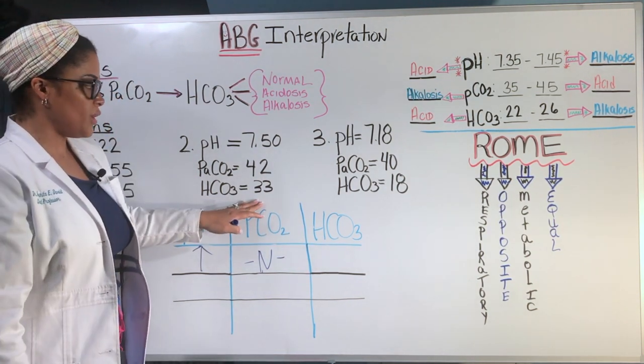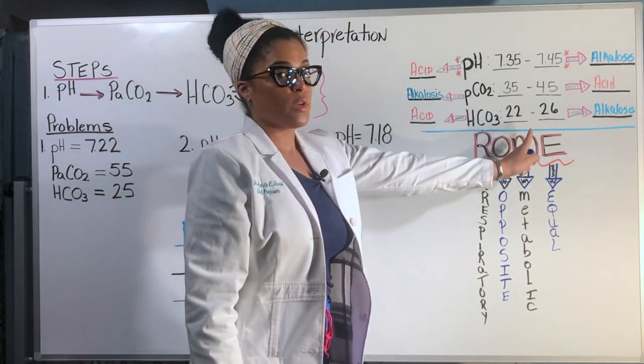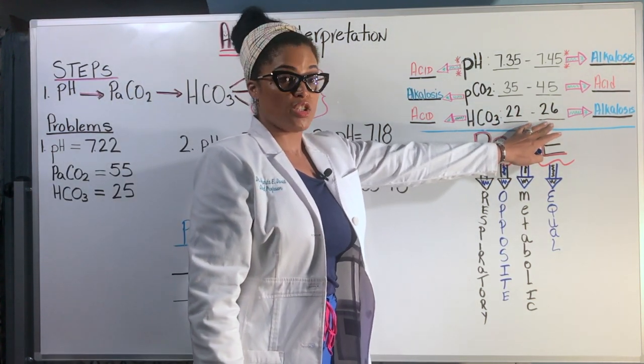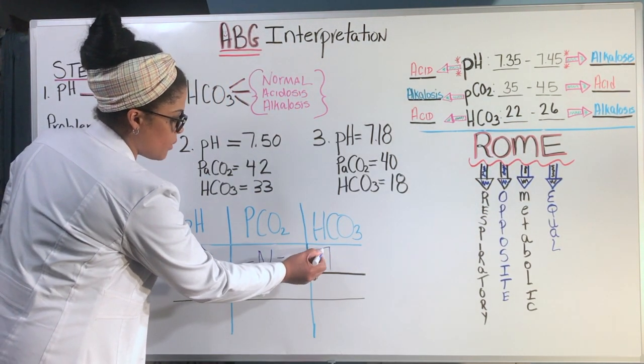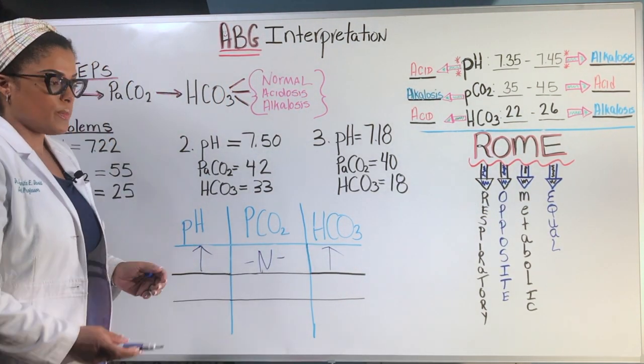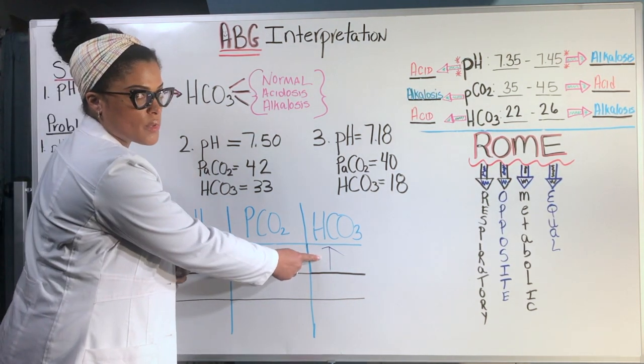Then we look at the bicarb. The bicarb in this example is 33. The normal bicarb is 22 to 26. So it is above the maximum range it should be, which is alkalosis. So we put the arrow up. So here's the pattern. The pH is high and the bicarb is high.